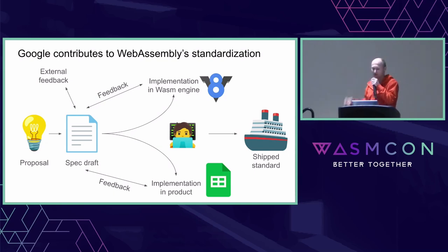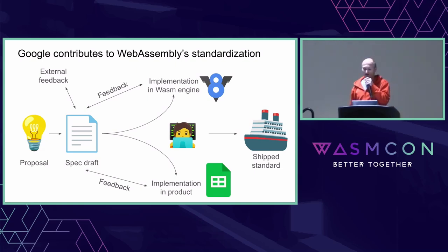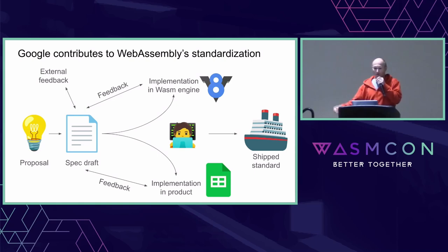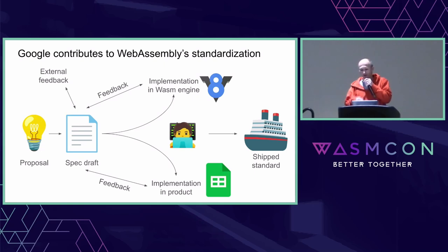Let's look at how standardization typically works at Google. It all starts with an idea — someone writes a spec draft. At Google, we build V8, the Wasm engine and JavaScript engine, so people start implementing the proposal. At the same time, we look for an internal customer that could use it — for example, Google Sheets. Both the implementation and the product give feedback back to the spec draft, and eventually, once everyone is happy, we ship the standard and ship support in the product.